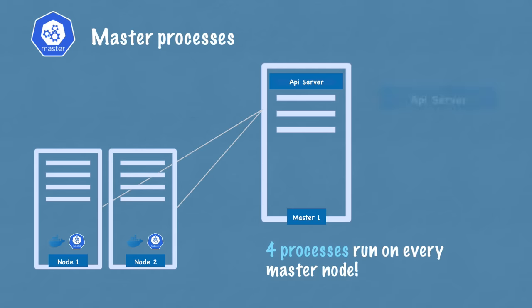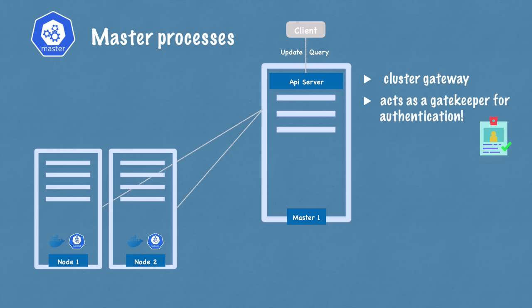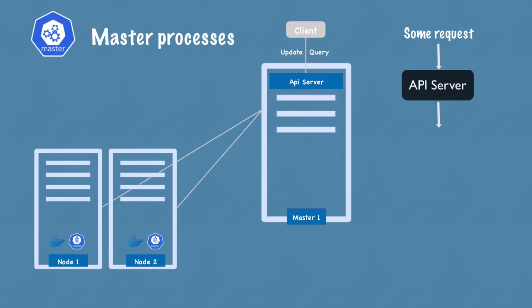Master servers or master nodes have completely different processes running inside. Four processes run on every master node that control the cluster state and the worker nodes. The first is the API server. When you as a user want to deploy a new application in a Kubernetes cluster, you interact with the API server using some client — it could be a UI like Kubernetes dashboard, a command line tool like kubectl, or the Kubernetes API. The API server is like a cluster gateway that gets the initial requests of any updates or queries into the cluster, and it also acts as a gatekeeper for authentication to make sure only authenticated and authorized requests get through.